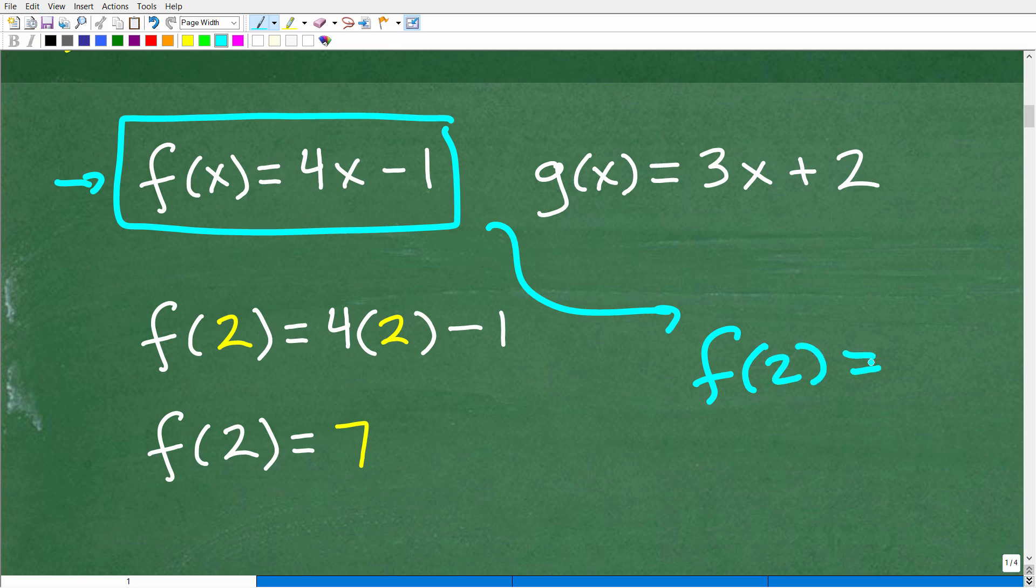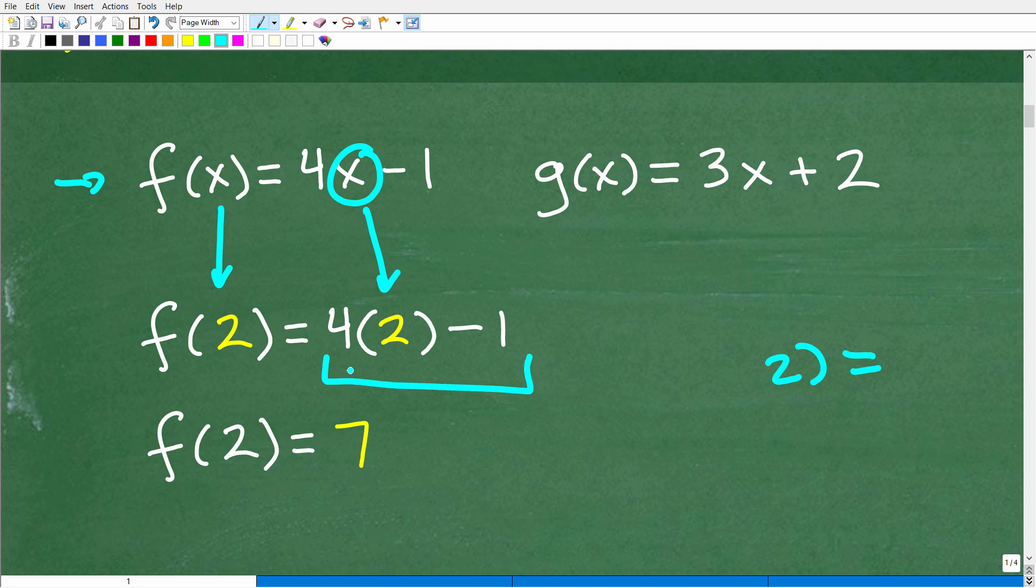So we're going to be plugging in a value into the function. So what does that mean? Well, what we're going to do is replace the x with a 2. Okay. So anywhere I see an x in my little function rule right here, I'm going to plug in a 2, and then I'm going to just simplify the result. So 4 times 2 is 8. 8 minus 1 is 7. So f(2) is equal to 7.